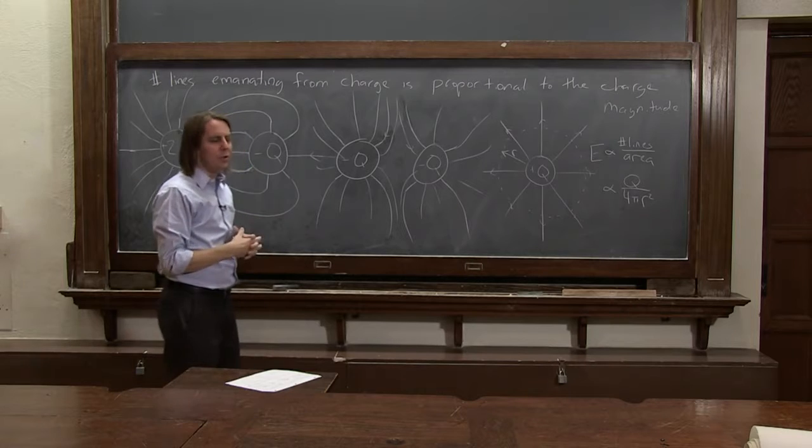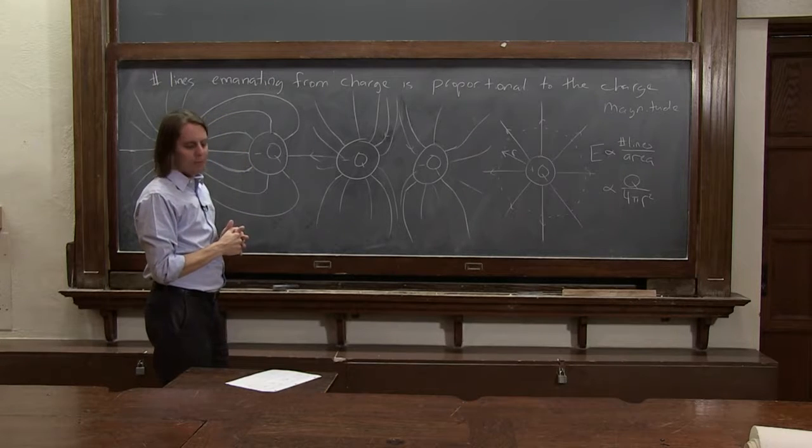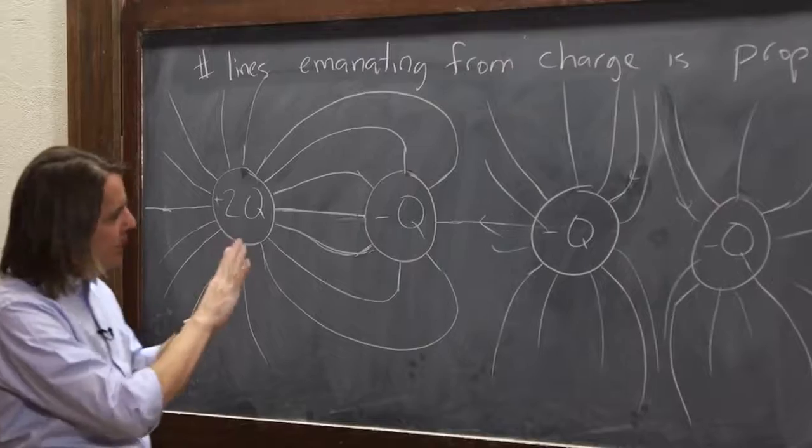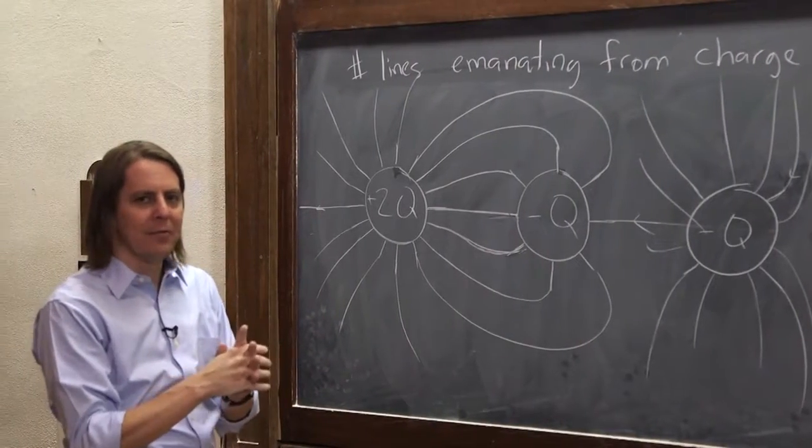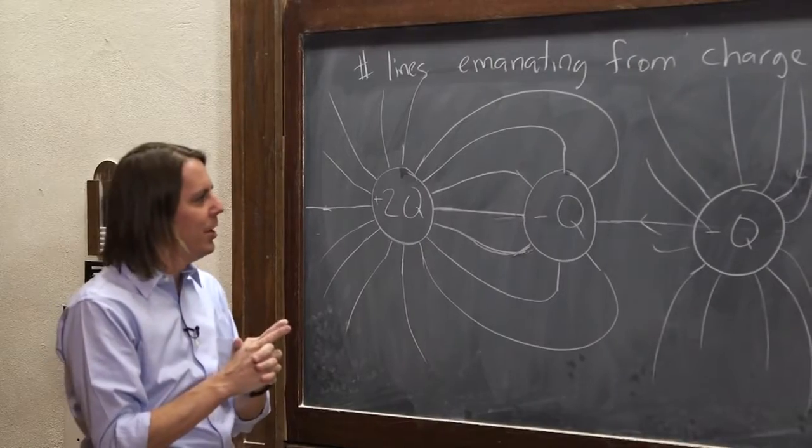That's why this way of using field lines works well for electric fields. So you're going to see lots of problems where we use lines. Sometimes you'll see problems where we use vectors. You just want to be able to jump back and forth between both, but the key is to remember they're both three-dimensional.